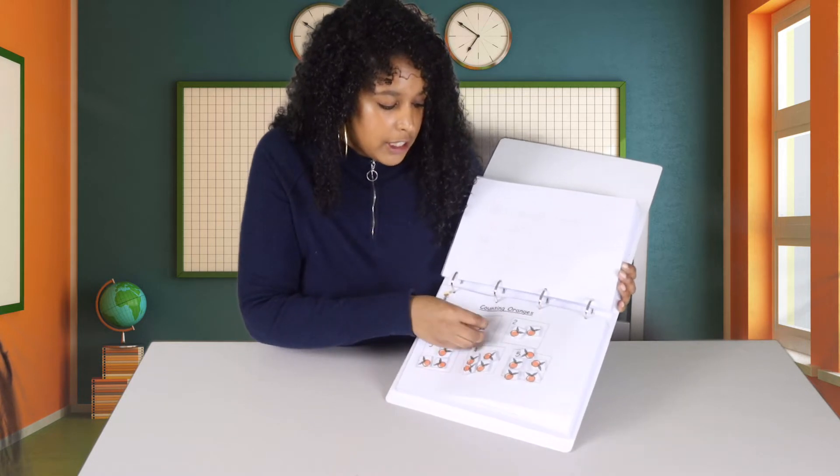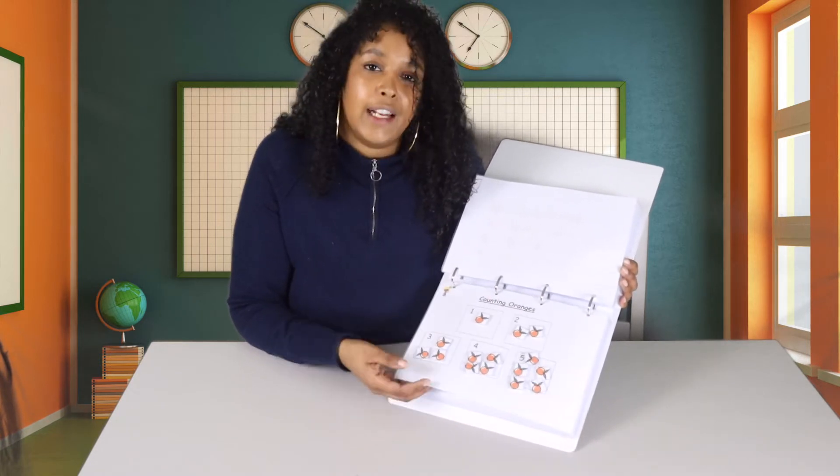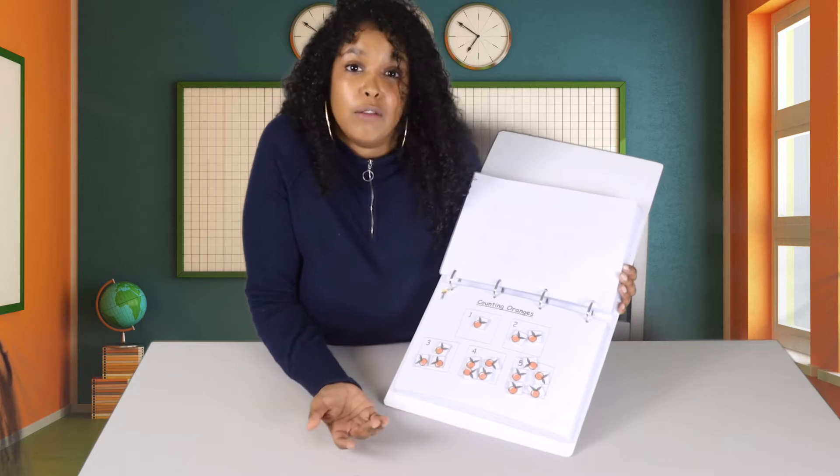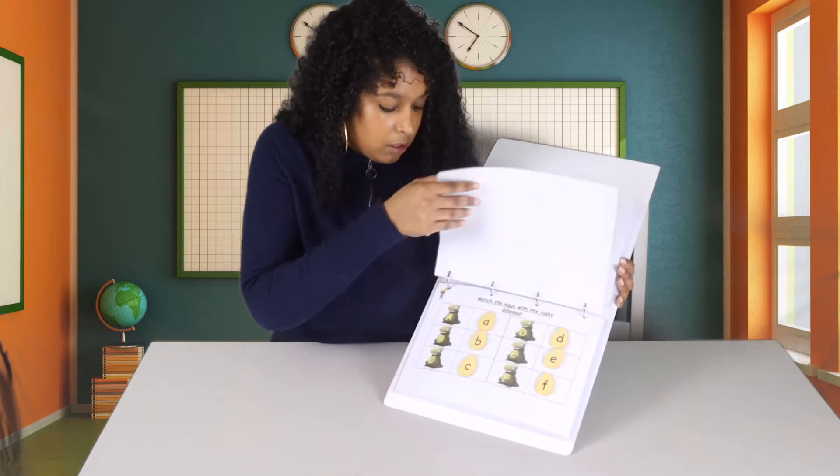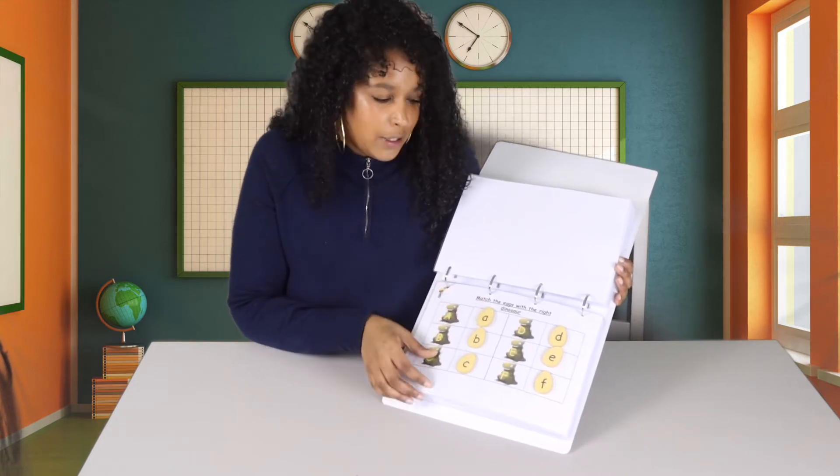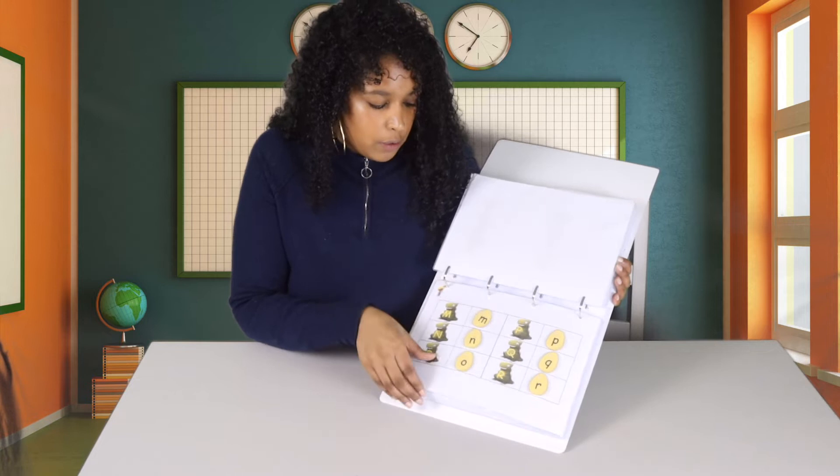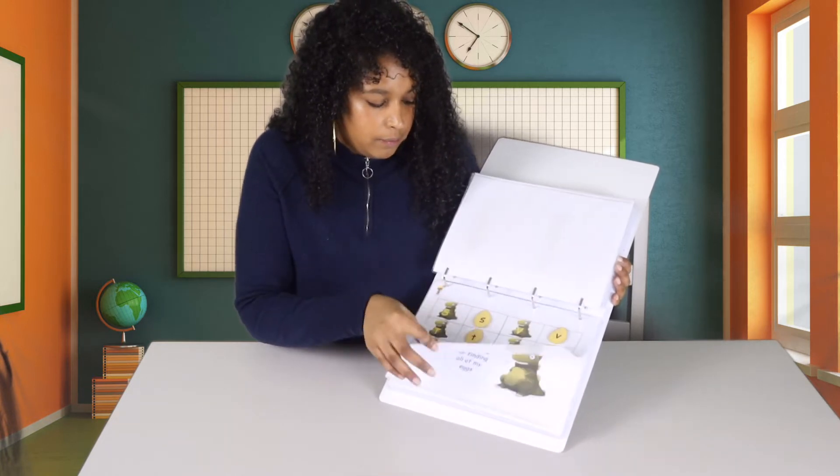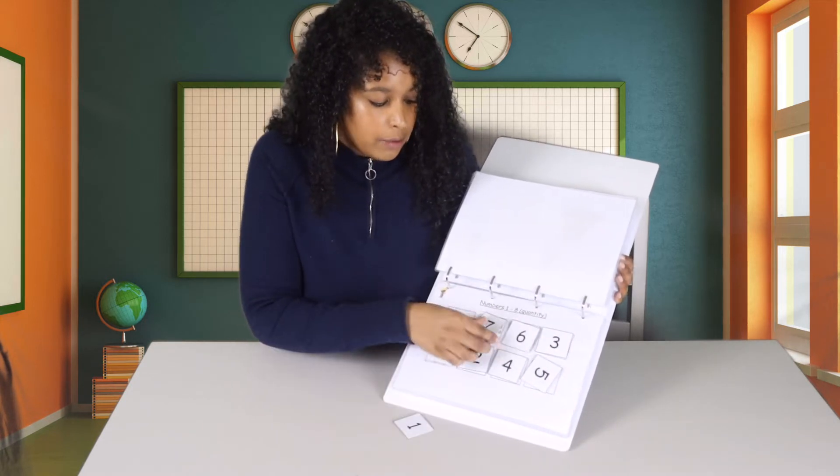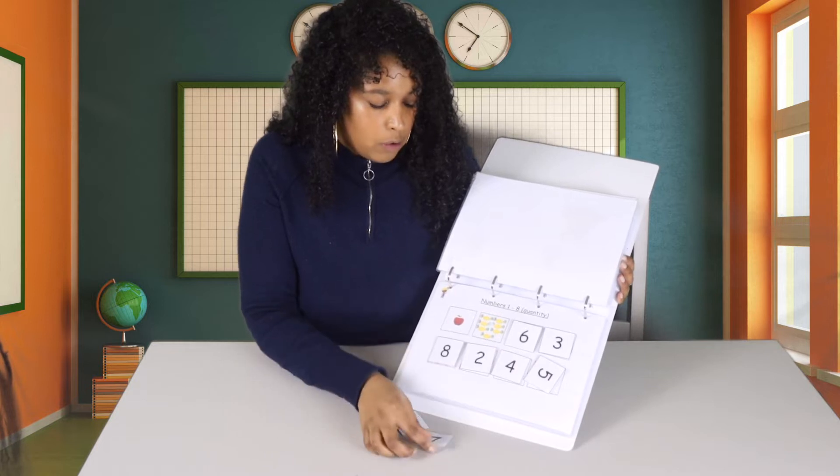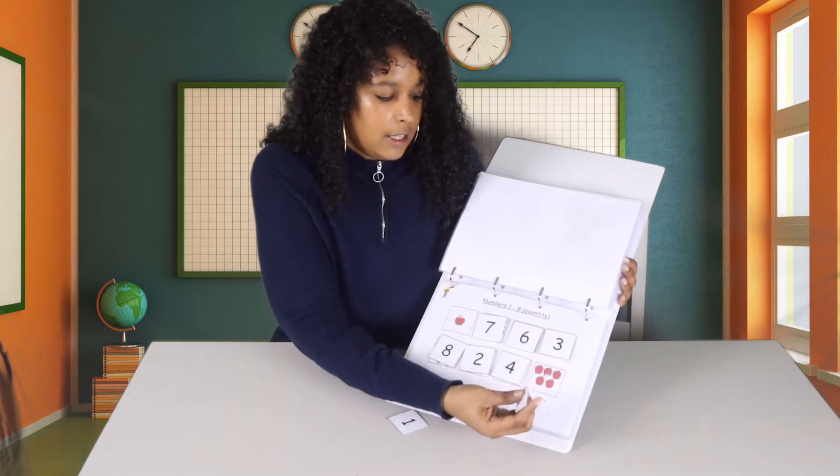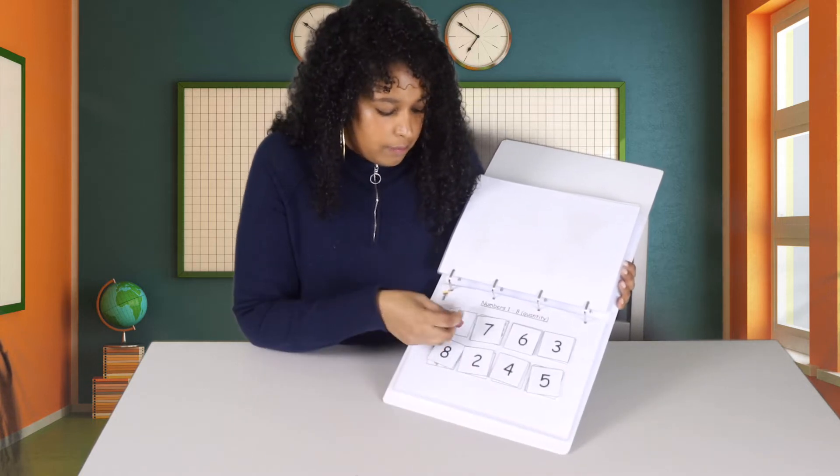Again, having made the sheet myself, I can increase the number of pattern copying, pattern matching, and what comes next in the pattern exercises for him. Very simply because I already have the template. Then we have some counting of oranges to go in their relevant boxes up to five. Again, once you can do this exercise easily, make the boxes slightly smaller or add another page that goes up to ten or even twenty.